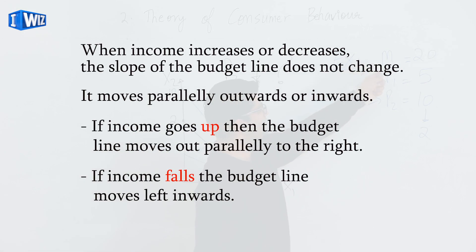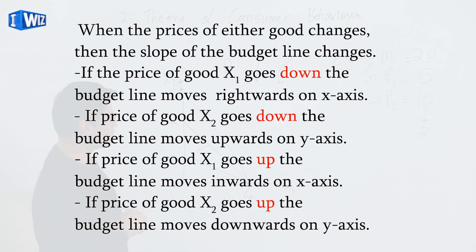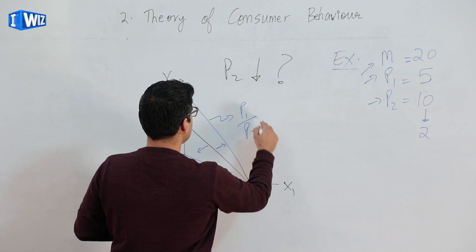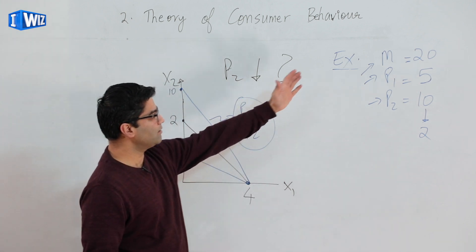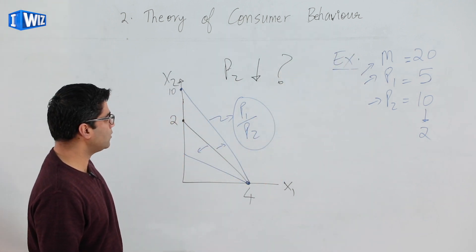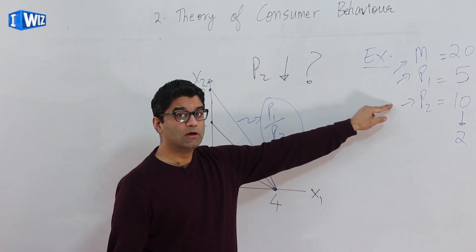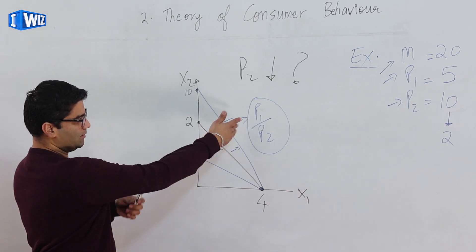One more thing before I summarize this topic. P1 over P2, this does not change when income goes up or goes down. Again, refer to the previous video if you forgot. But when prices change, either P1 or P2, the slope of this line is going to change as well.